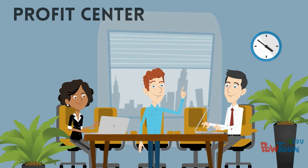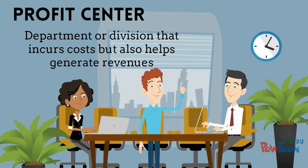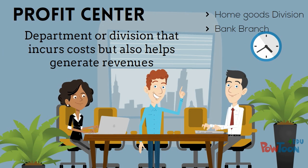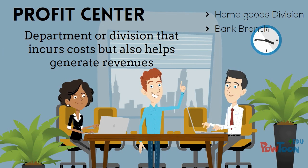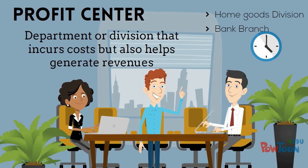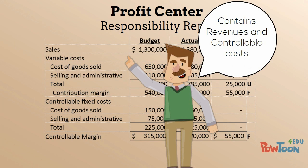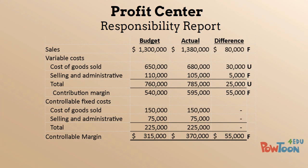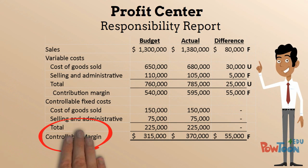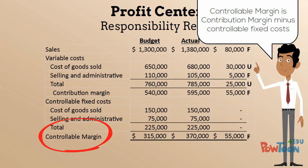A profit center is a department or division that incurs costs that also help generate revenues for the company. These are usually divisions within a company or separate branches or locations. The responsibility report for a profit center contains both revenues and costs, but still focuses on costs that are controllable by that manager. The report also contains a calculation of controllable margin, which is the contribution margin minus controllable fixed costs.